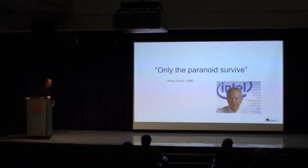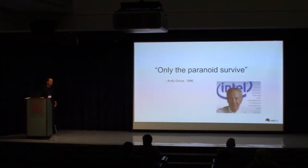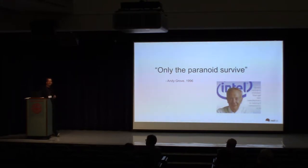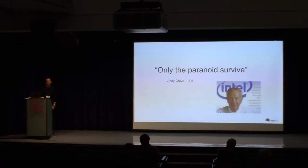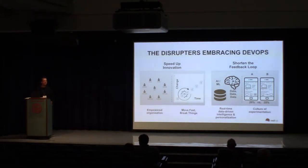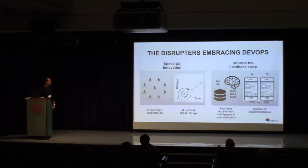First off, Andy Grove back in the 90s talked about how only the paranoid survive. It's not about security, but it was about strategic inflection points when there's massive amounts of change in the industry. And a company has to decide, do they pivot and change course or stay as is? Many companies are having to make that decision across all different industries right now. But also in terms of security, we're seeing a lot of disruption.